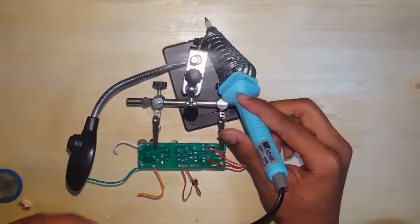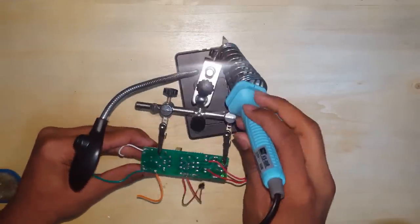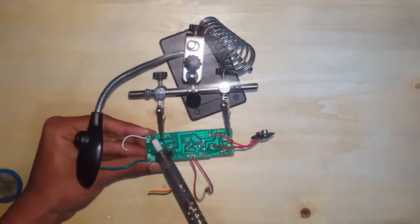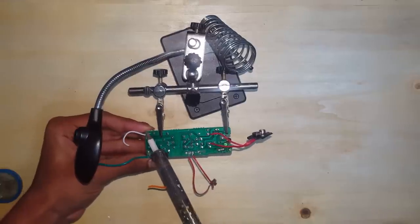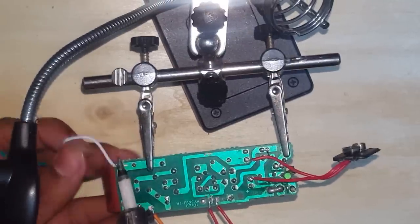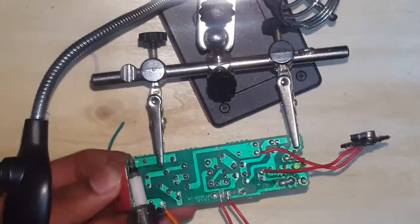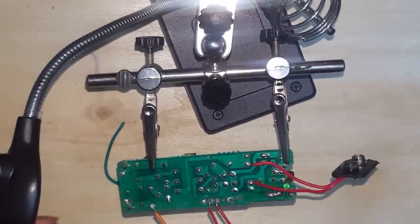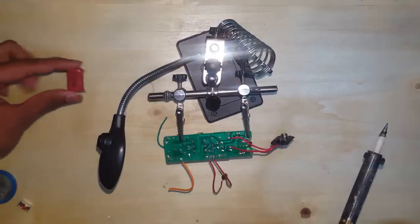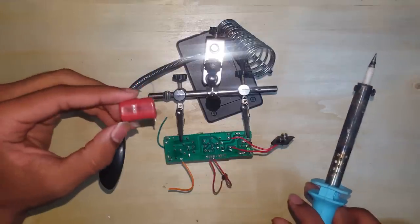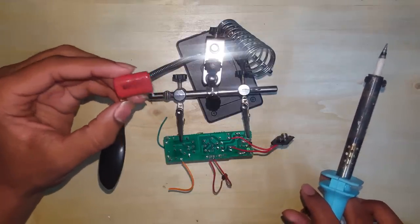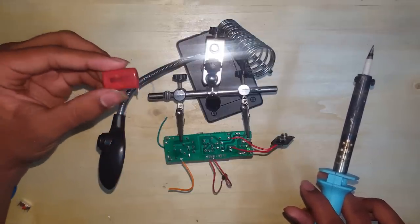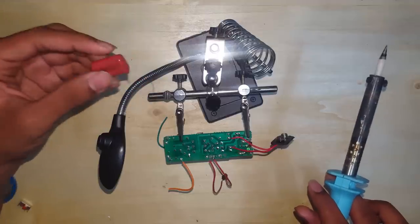And the last thing we're gonna remove is the capacitor over there. Desolder the wires and remove the capacitor carefully. Once you've got the capacitor out, keep it aside. The main reason we're not using this capacitor is that it has a very high capacitance and a very low voltage rating, so it can be of use in future projects.